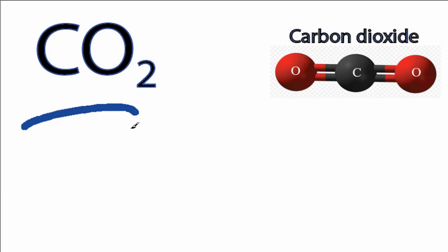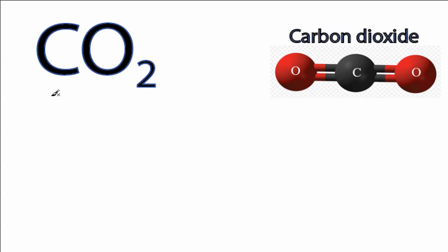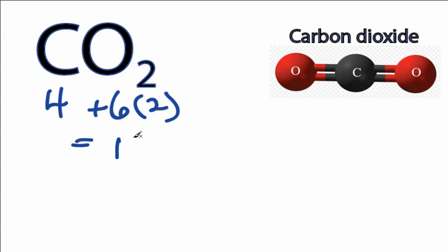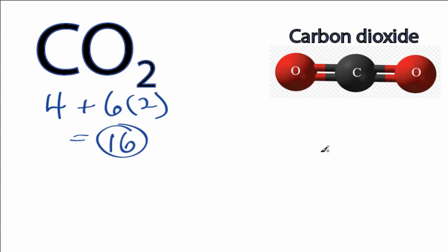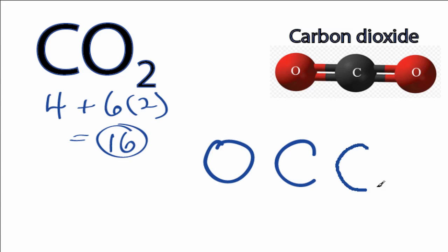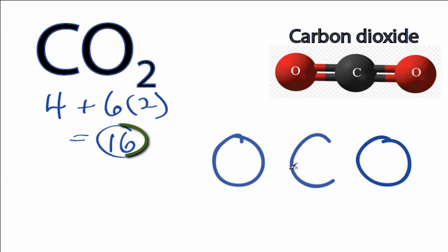This is the Lewis structure for carbon dioxide. On the periodic table, carbon is in group 4 or 14, giving it 4 valence electrons, plus oxygen has 6 valence electrons, and we have 2 oxygens, for a total of 16 valence electrons. Carbon is least electronegative, so we'll put it in the center with an oxygen atom on either side.